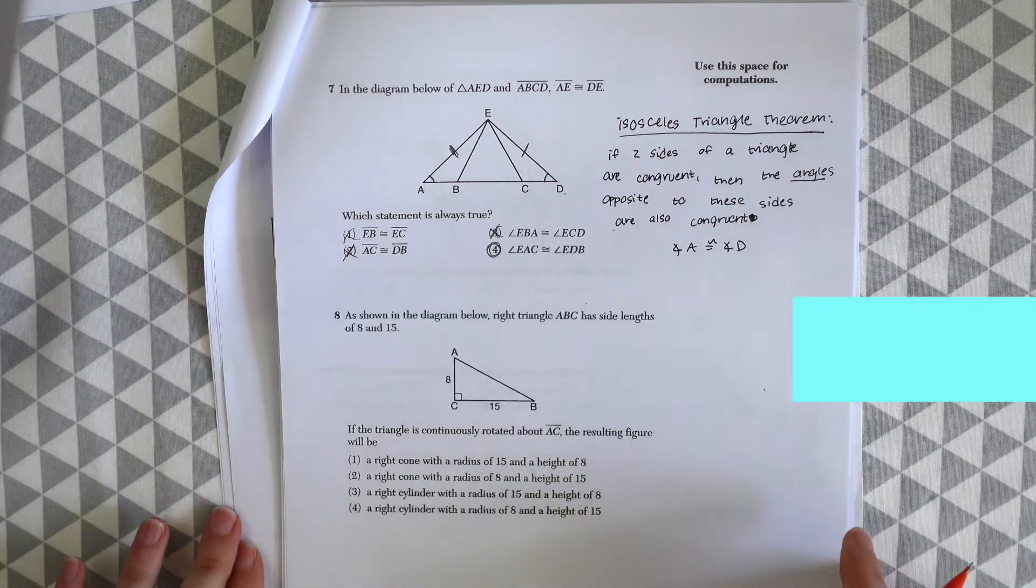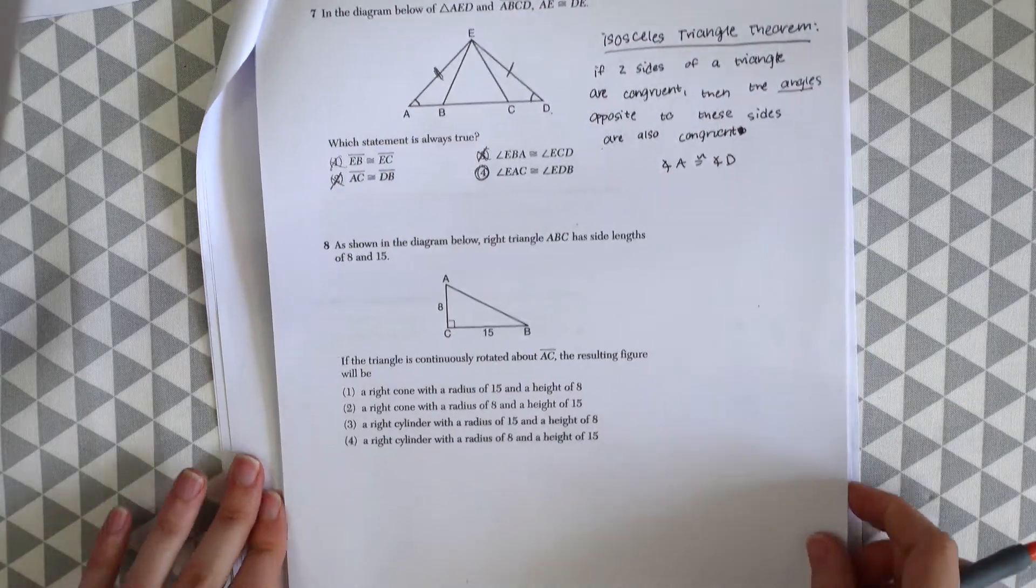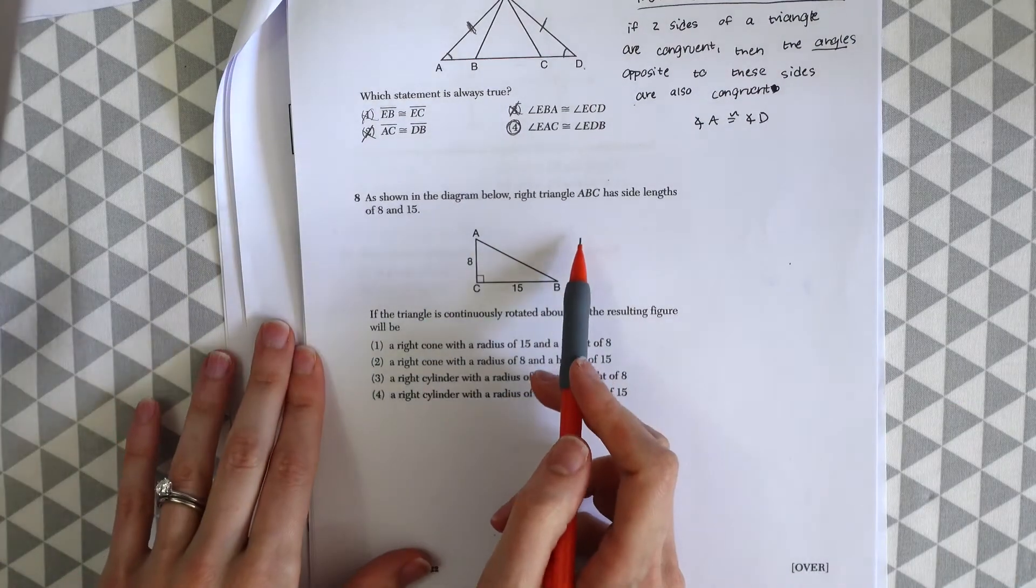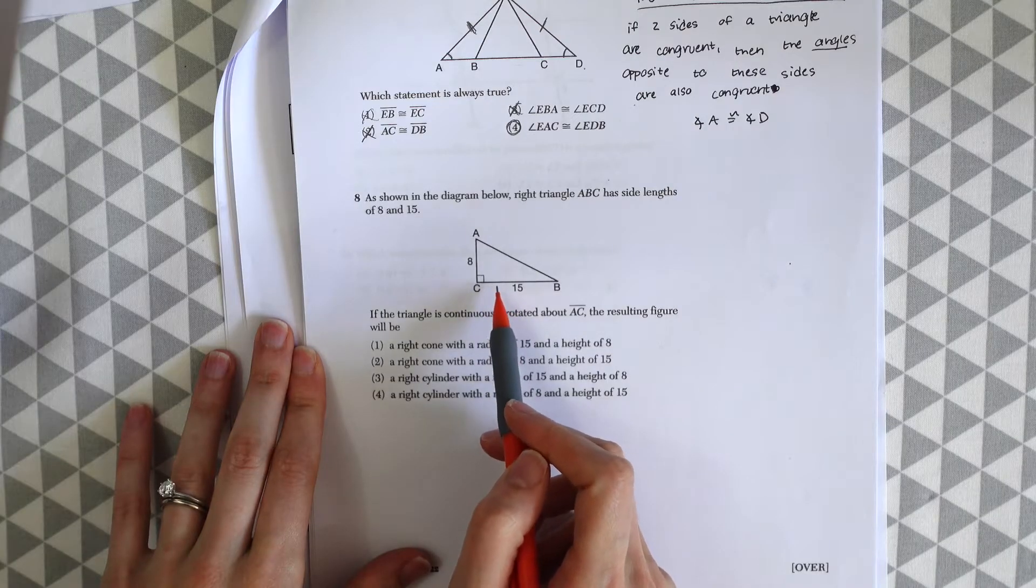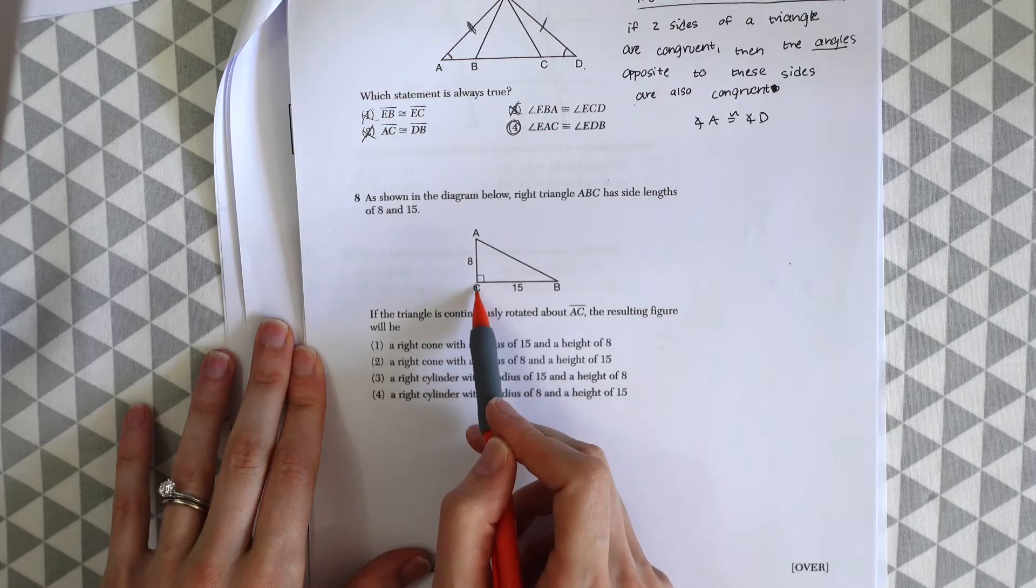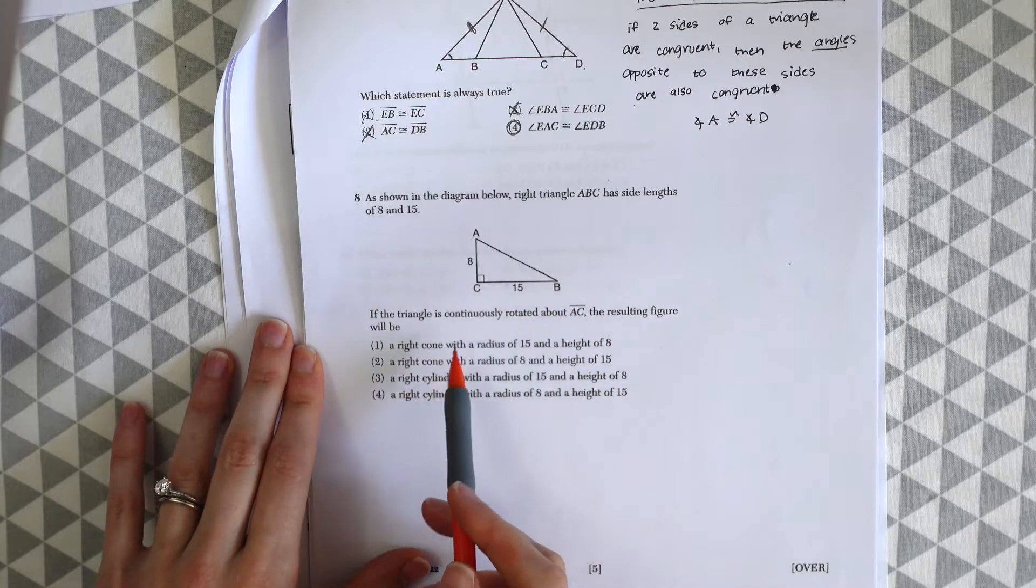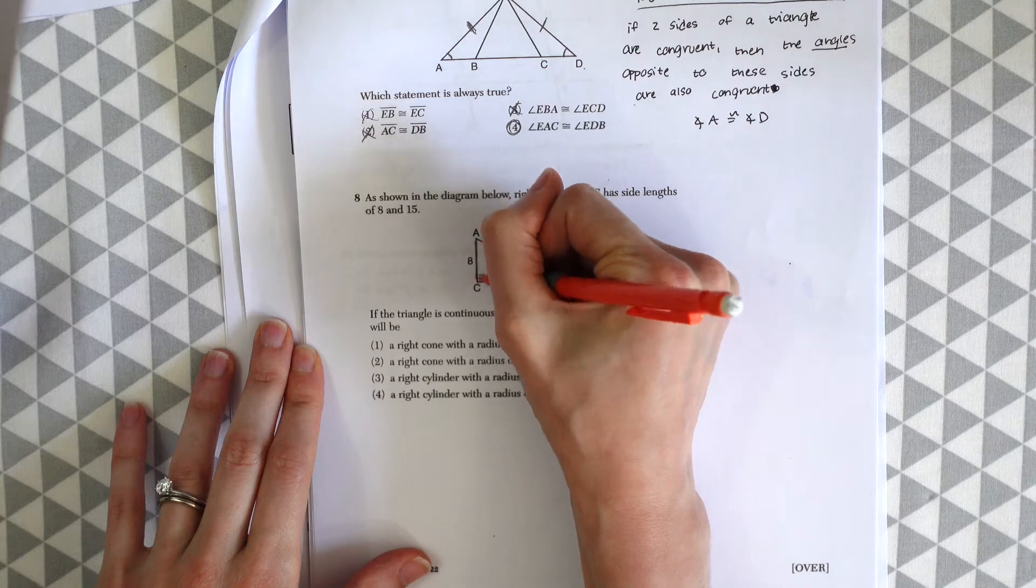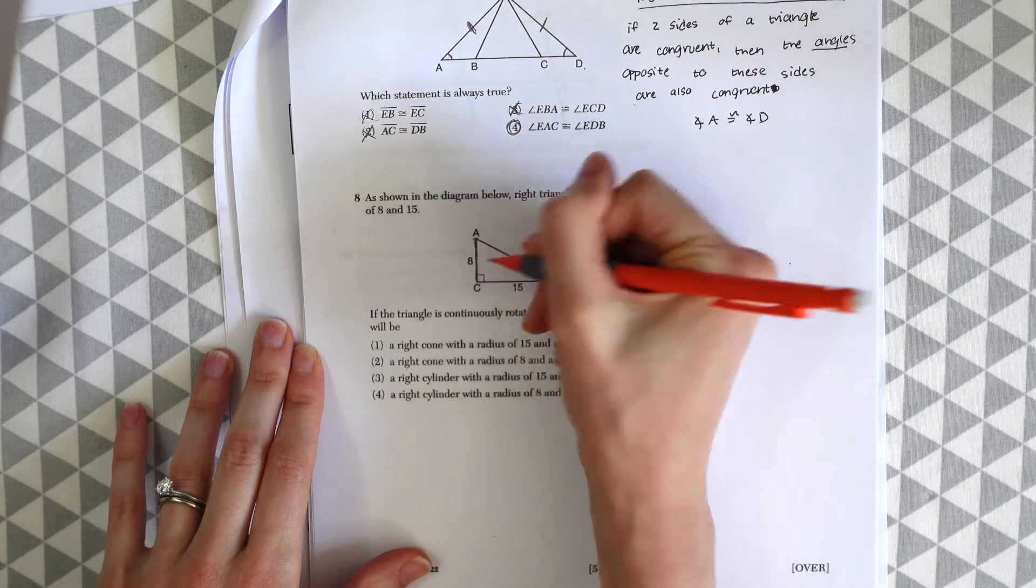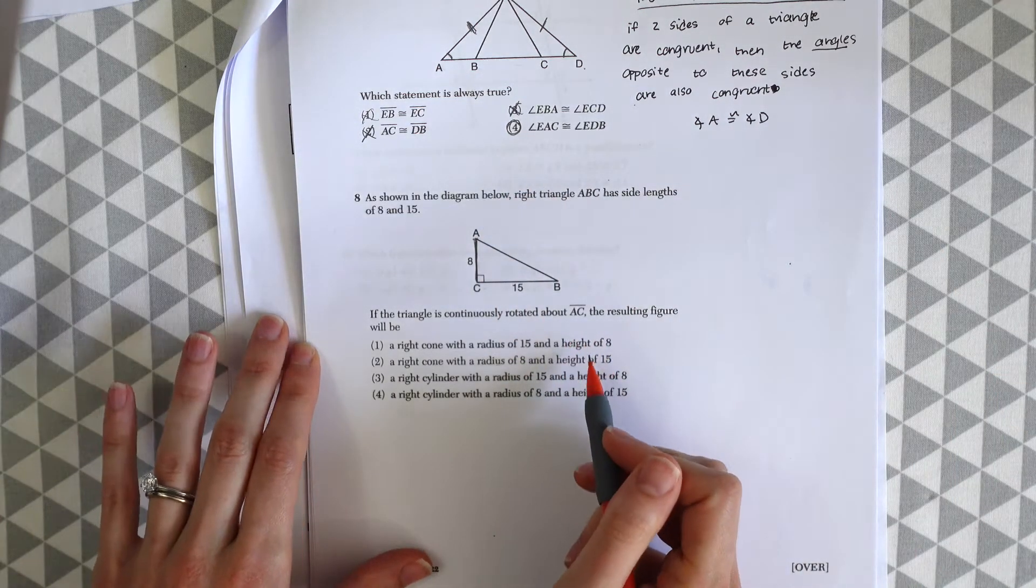On to question number eight. As shown in the diagram below, right triangle ABC has side lengths 8 and 15. So we have right here 8 and then 15. If the triangle is continuously rotated about AC, so if it's rotated about here, the resulting figure will be.